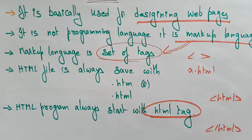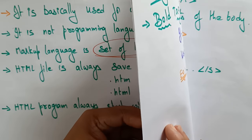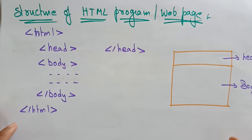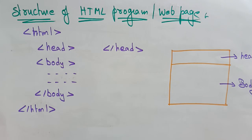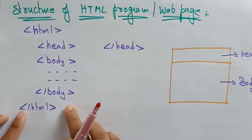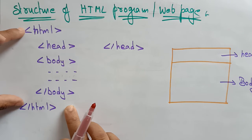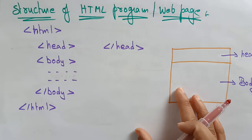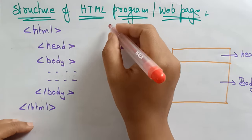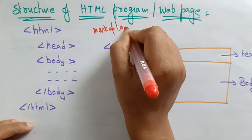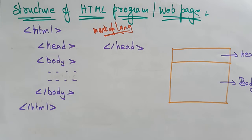Now let's see the structure of an HTML program — how the web page will appear. There is a starting tag and an ending tag. In between the starting and ending tags, you have many more tags, because everything must be represented in tags. That is why we call it a markup language, not a programming language — it consists of everything in the form of tags.